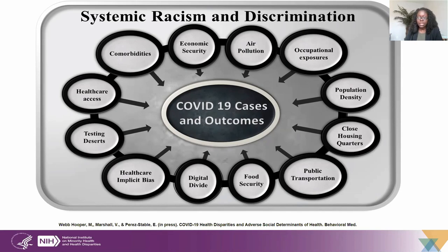That is the conditions and the environments in which people are born, live, learn, work, play, worship, and age that affect a wide range of health, functioning, and quality of life outcomes and risks, including the risk of COVID-19 infection. This model depicts the backdrop of structural and systemic racism and discrimination, which a robust body of evidence has documented directly affects health.